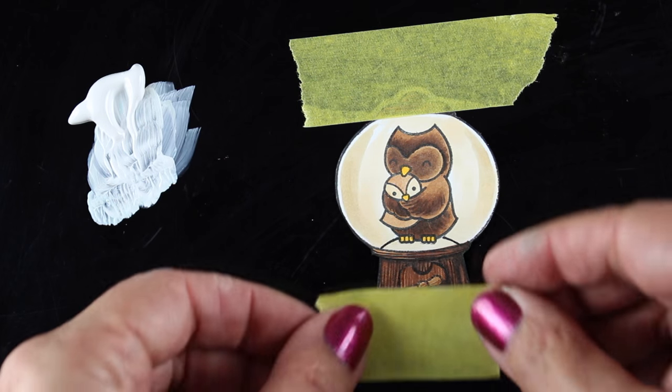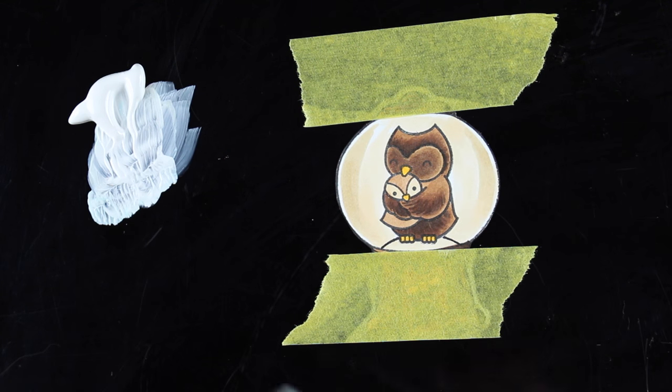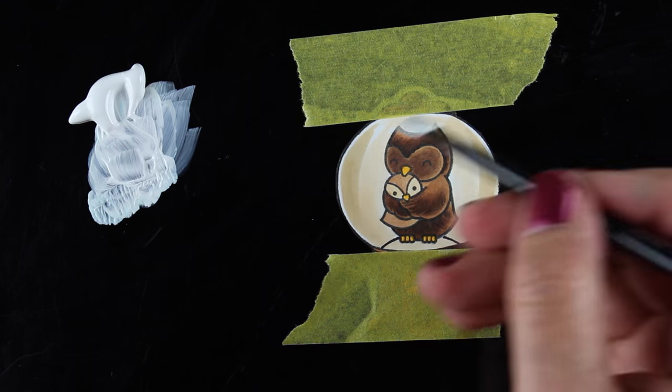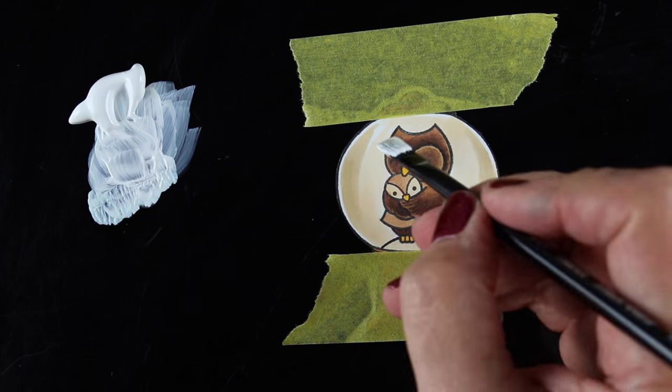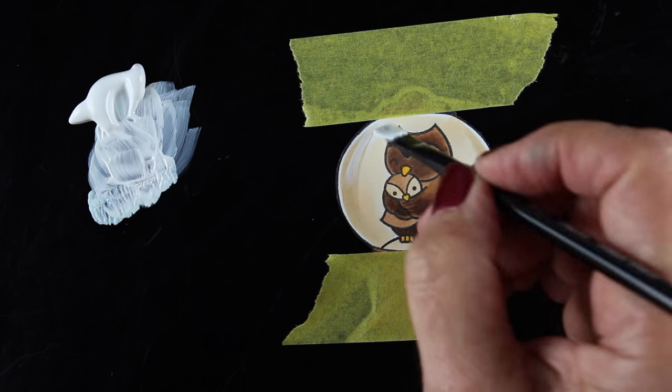And then I added the yellow tape to block everything off so I wouldn't get any white paint. And I did rub the tape on my sleeve so that I would take off some of the sticky. And then round shapes are going to have round highlights.